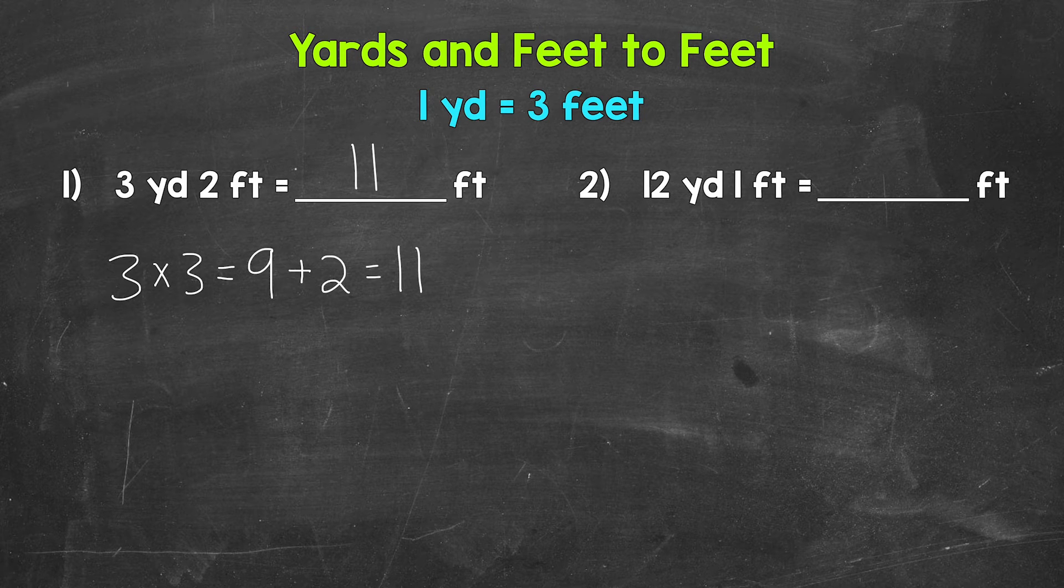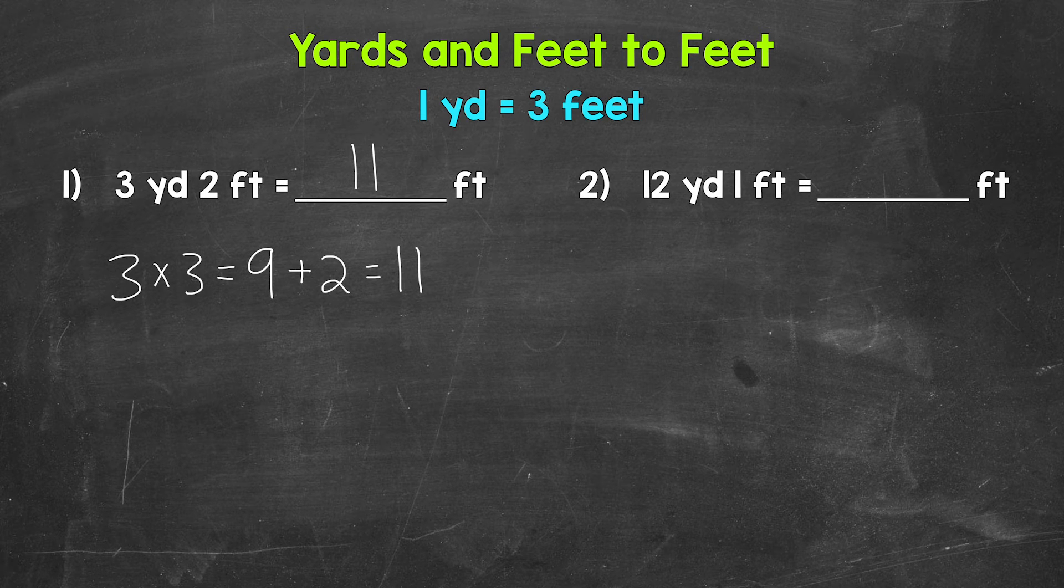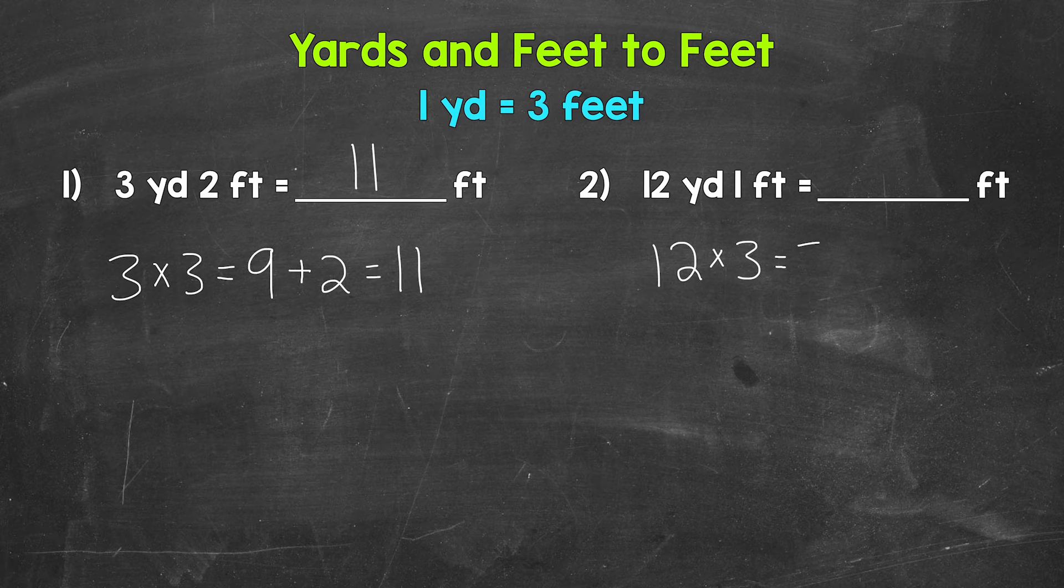Let's move on to number two, where we have twelve yards one foot equals how many feet. The first thing we need to do is convert twelve yards to feet. So we multiply by three. Twelve times three gives us thirty-six. Twelve yards equals thirty-six feet.